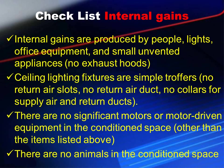Internal gains are produced by people, lights, office equipment, and small unvented appliances. No exhaust hoods — and that means big exhaust hoods, not a small kitchen exhaust. Ceiling lighting fixtures are simple truffles, meaning they're just light fixtures. They don't have any ductwork attached to them, no airflow going through them, and no way of adjusting or routing air. You sometimes see fixtures hooked to supply or return ducts in commercial buildings. There are no significant motors or motor-driven equipment in the conditioned space other than items listed.